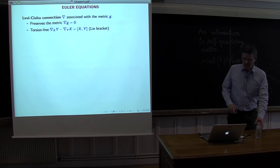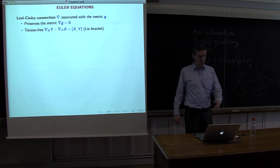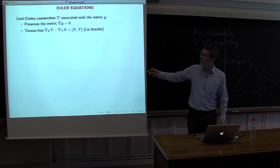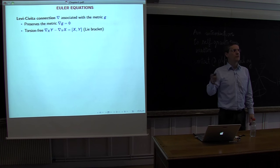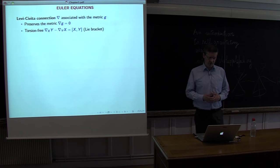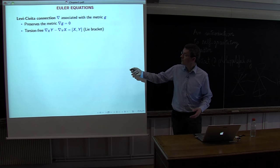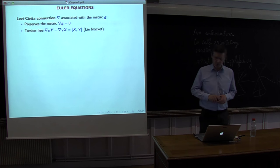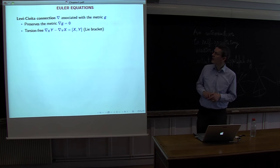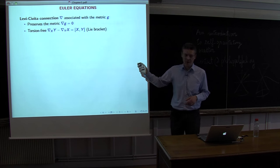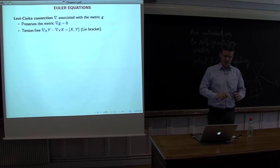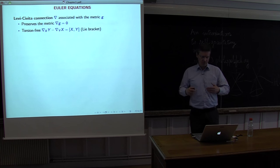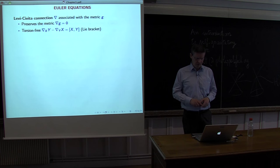To proceed, I need to recall a few things from differential geometry. Given a metric, the Levi-Civita connection allows you to compute derivatives of tensors, vector fields, and functions. It has the property that it preserves the metric — applying it to the metric gives zero — and it is torsion-free, meaning ∇_X Y − ∇_Y X equals the Lie bracket, with no torsion error term.